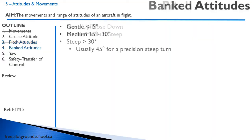You can also have banked attitudes. Gentle is less than 15 degrees, medium is 15 to 30 degrees, and steep is greater than 30 degrees. A precision steep turn is typically 45 degrees. So let's watch a video on how these different attitudes look. Keep in mind it's not exact — this will be different for every pilot based on the aircraft they fly and how high they are.